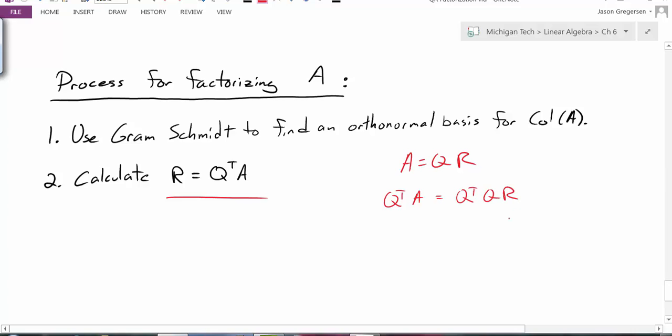But because Q has orthonormal columns, we know that this product over here is identity. And identity times R is just R. So this gives us a way to find that R matrix after we've found Q.